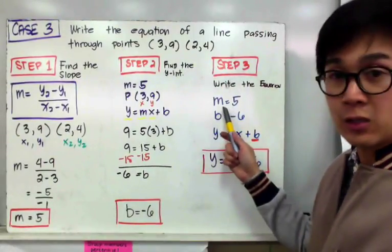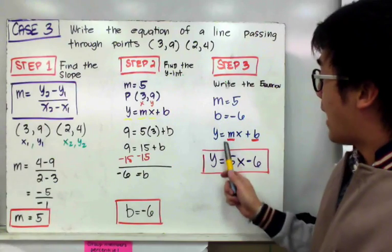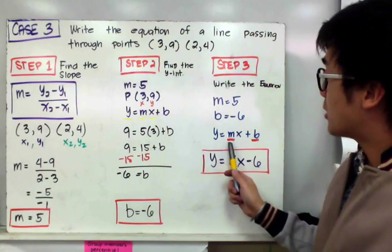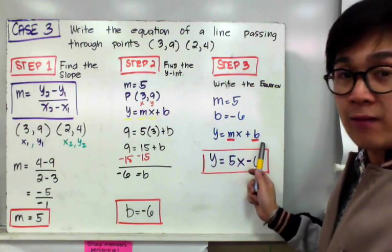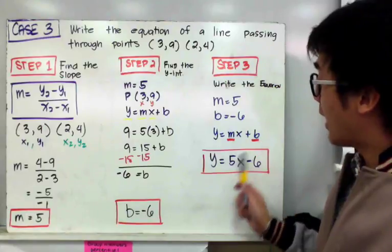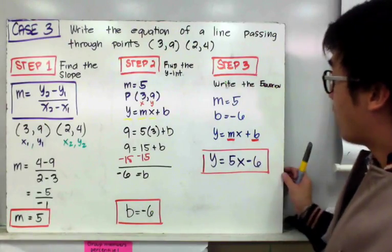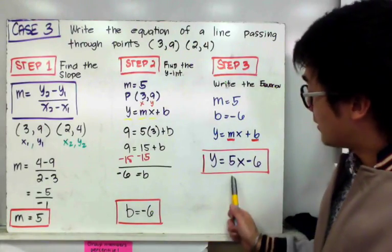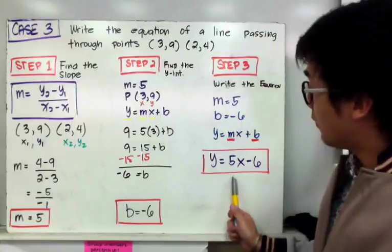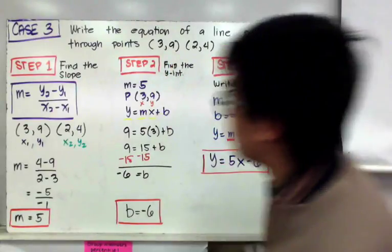For step number 3 in writing the equation of a line, since I have my slope and my y-intercept, I replace m and b to get the equation of my line: y = 5x − 6. This is the equation of the line given points (3, 9) and (2, 4).